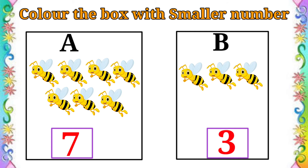Which one is the smaller number? Very good. B set. So let's colour B set of honey bees.